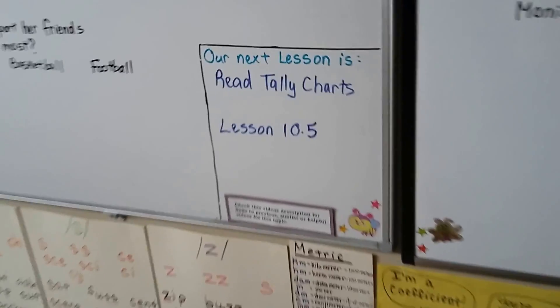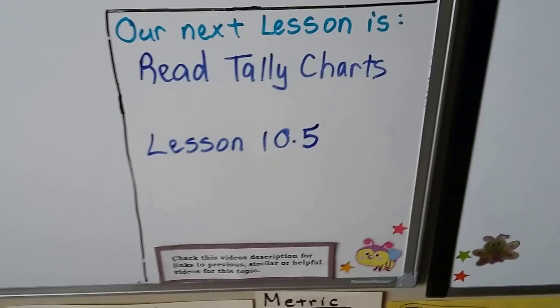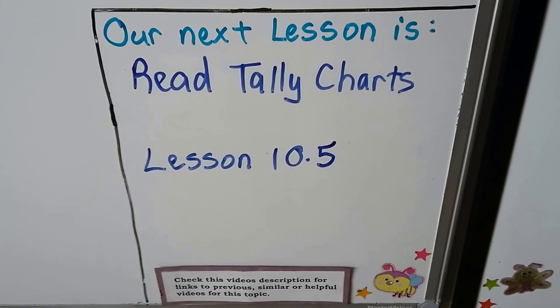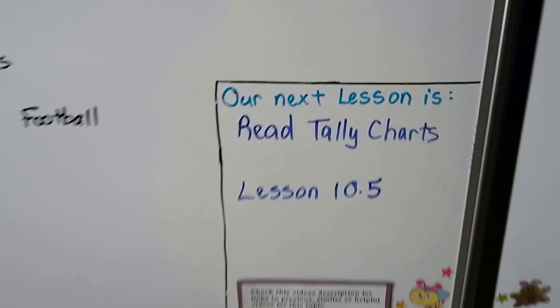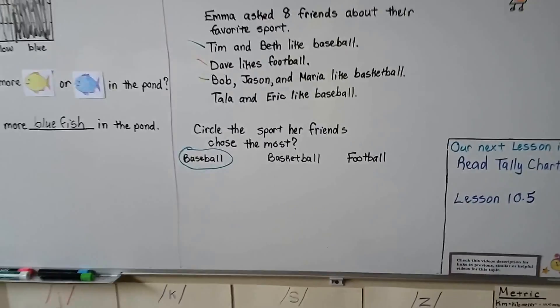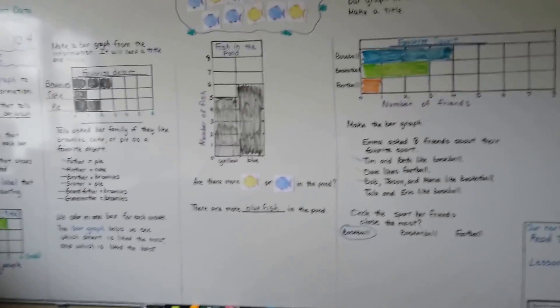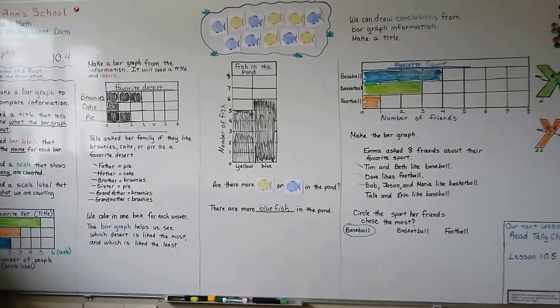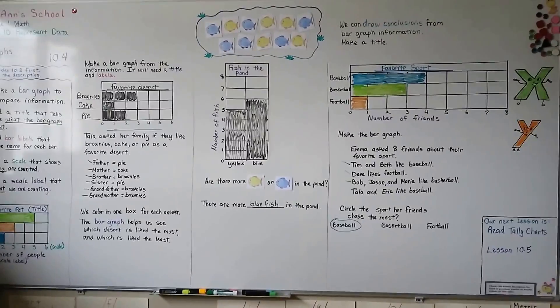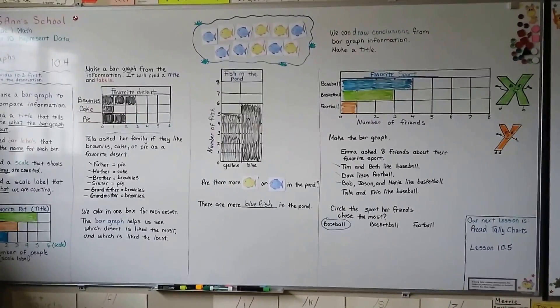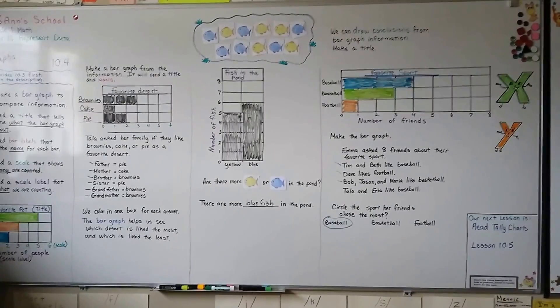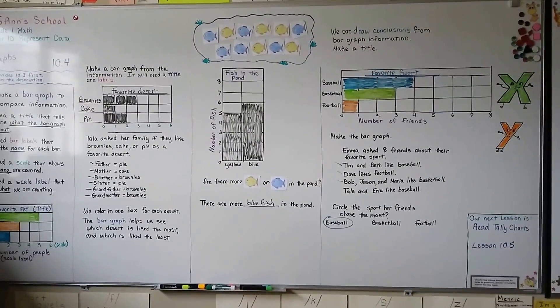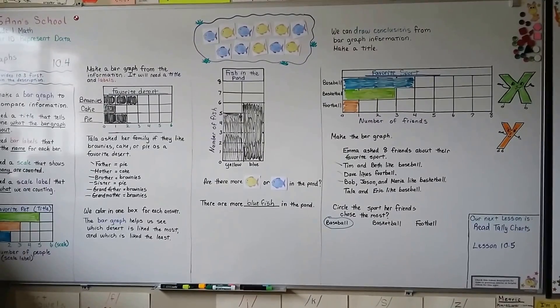So our next lesson is going to be about tally charts and tally marks. We're going to learn how to read tally charts in lesson 10.5. Practice making some bar graphs. Maybe you can ask your family what their favorite dinner is or what their favorite breakfast is. Maybe you can ask them what their favorite sport is or their favorite dessert. And you can make your own bar graph. Have a great day and I'll see you next time. Bye.